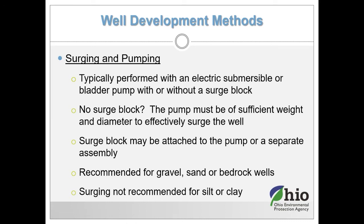For surging and pumping, we typically use an electric submersible pump or bladder pump with or without a surge block. If a surge block is not used, the pump must be of sufficient weight and diameter to effectively surge the well. Using a small plastic pump like a Grundfos ReadyFlo 2 in a 2-inch well may provide some surging action but probably isn't very effective — maybe 20% of where you need to be. Surging with just a pump is kind of wishful thinking in most cases. The surge block can be attached to the pump or used as a separate assembly. This technique is recommended for gravel, sand, or bedrock wells.